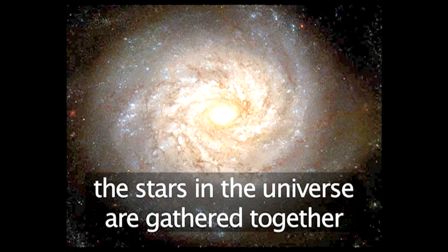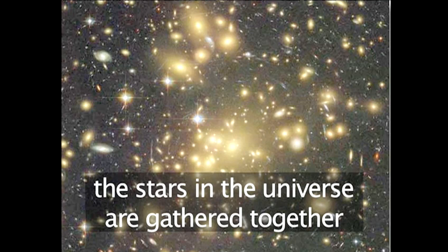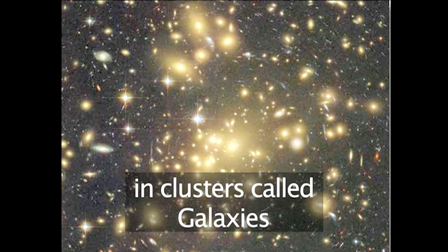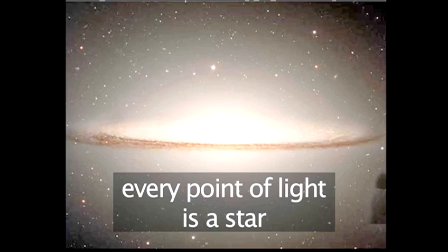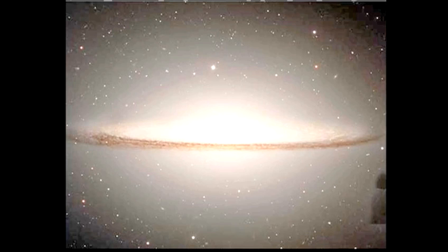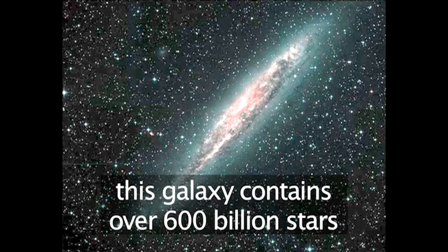All the stars in the universe are not scattered around randomly, but instead are grouped together in clusters called galaxies. Galaxies come in many shapes and sizes and contain billions of stars. It is said that there are more stars in the universe than there are grains of sand on every beach in the world.